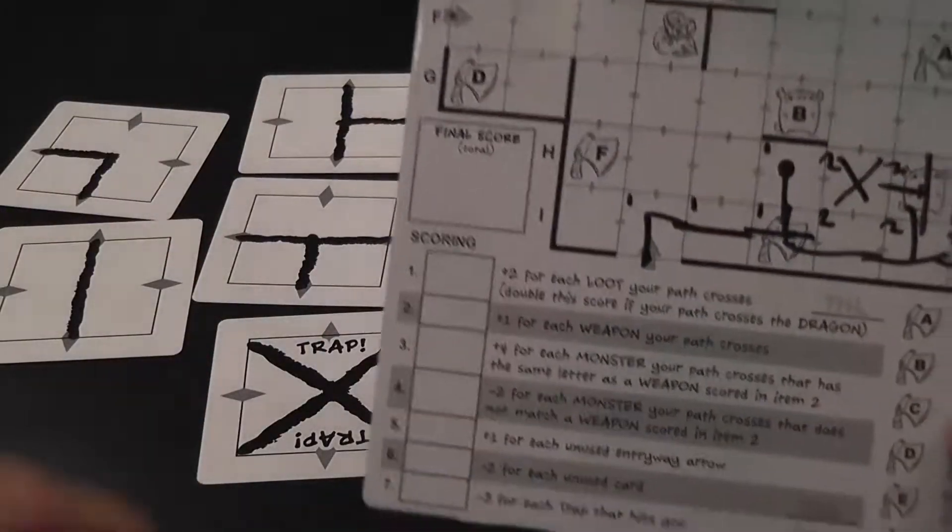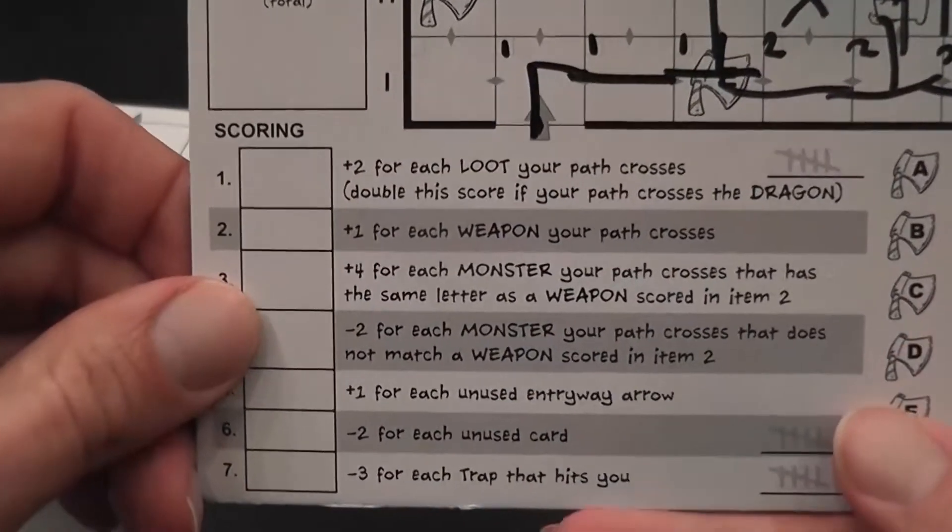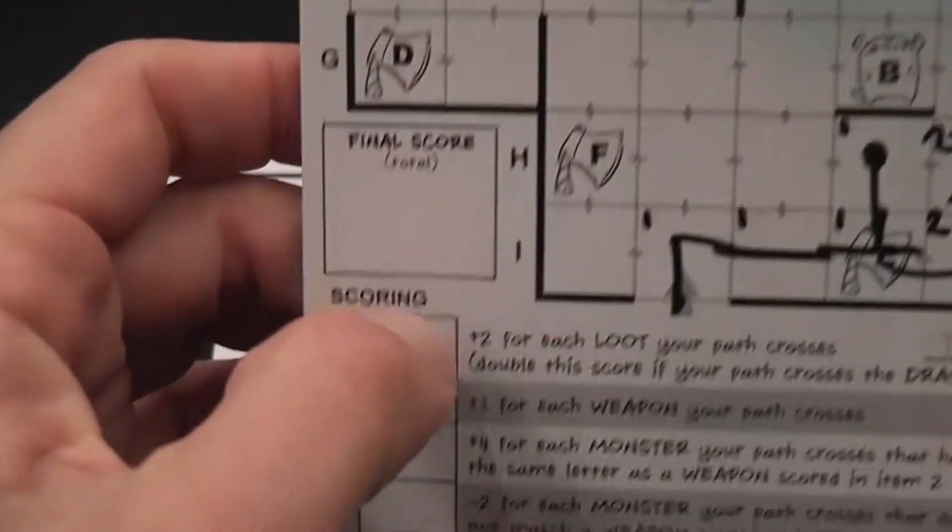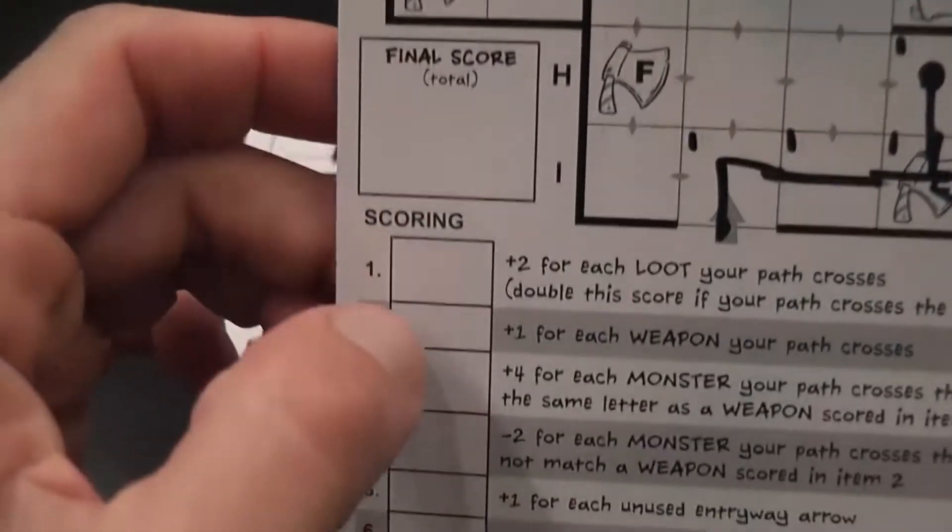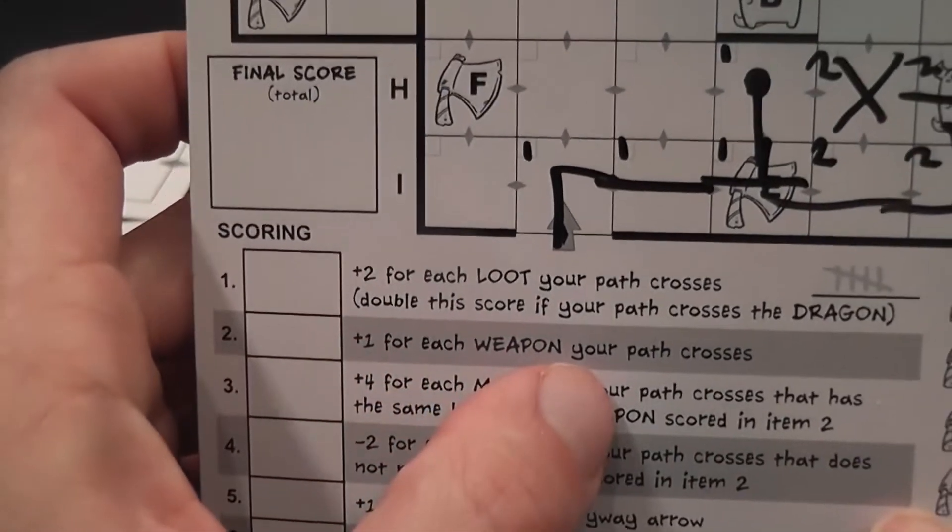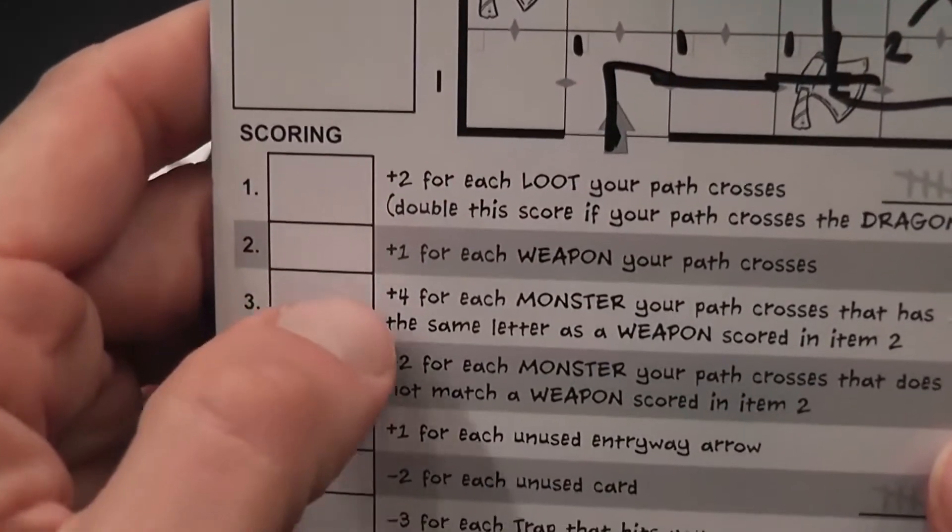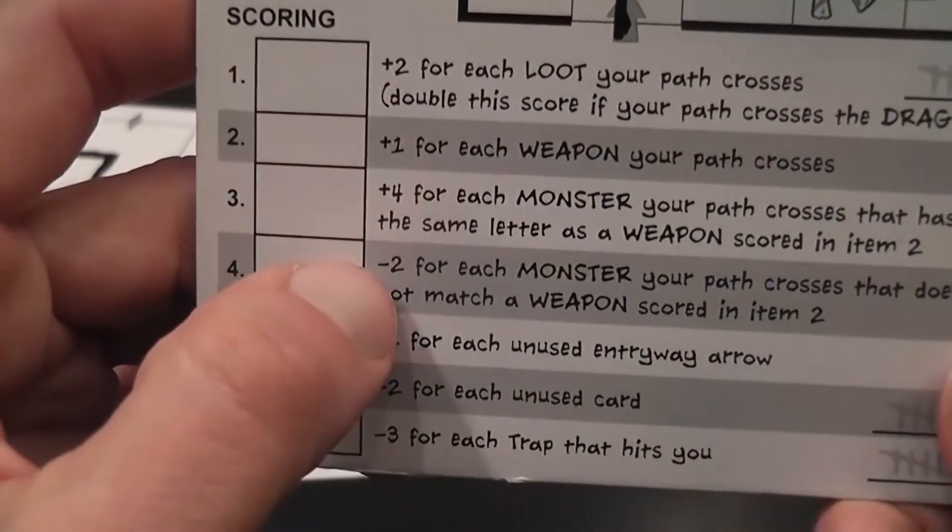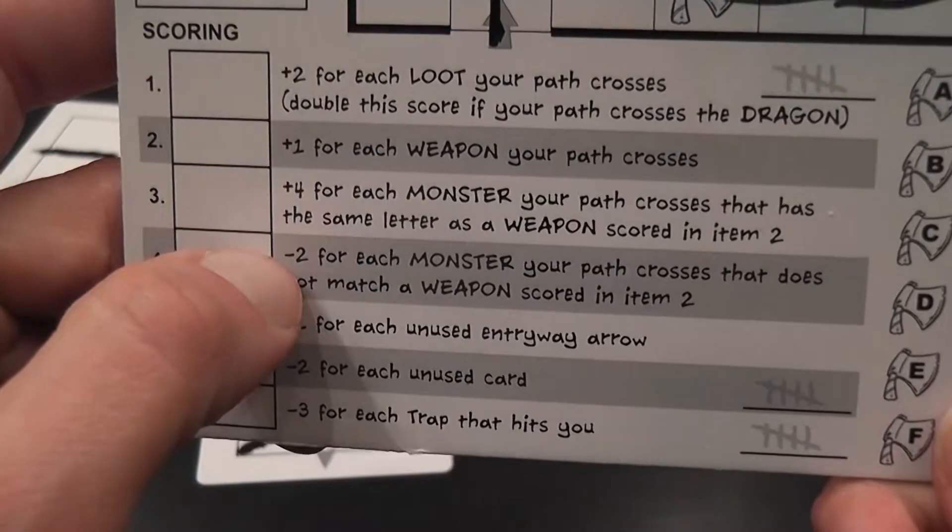So you continue like this for seven turns and at the end what you score is two points for each loot whose room you entered, plus one for each weapon that you cross with your path, plus four for each monster that you cross when you have the corresponding weapon.